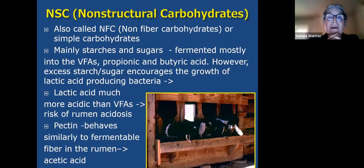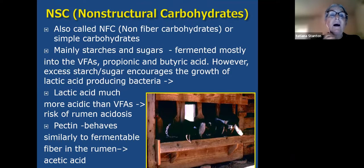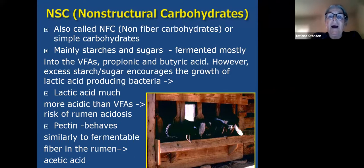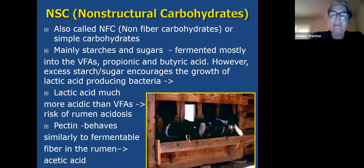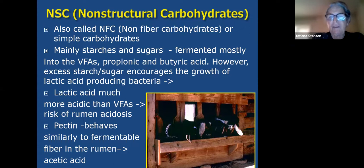Non-structural carbohydrates exist within the plant cell itself — that's why when you chew on a grass stem, you often taste something sweet, especially from a younger stem. Also called non-fiber carbohydrates, they are mainly starches and sugars and ferment primarily to propionic and butyric acid. However, excessive amounts of sugar and starch encourage lactic acid-producing bacteria in the rumen. Lactic acid is much more acidic than propionic, acetic, or butyric acid, making the rumen too acidic and creating a risk of rumen acidosis.